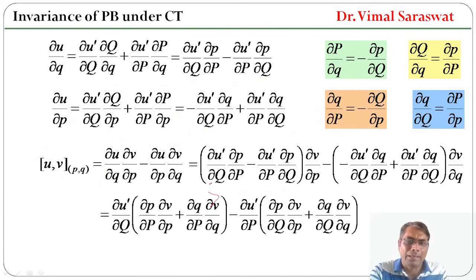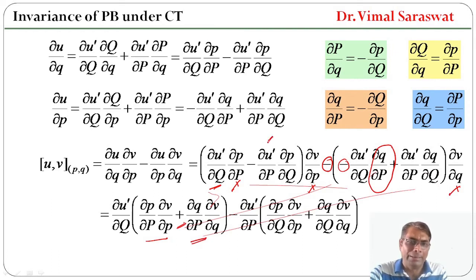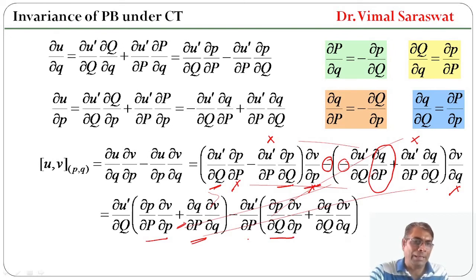Taking del u_dash / del Q common, we get in bracket: del P / del P · del v / del P which is here, and this negative and negative become positive, plus del Q / del P · del v / del Q which is written here. Taking del u_dash / del P common from the remaining terms: minus del u_dash / del P, and in bracket del P / del Q · del v / del P which is written here, plus del Q / del Q · del v / del Q which is written here.